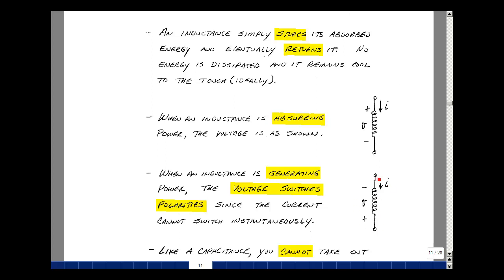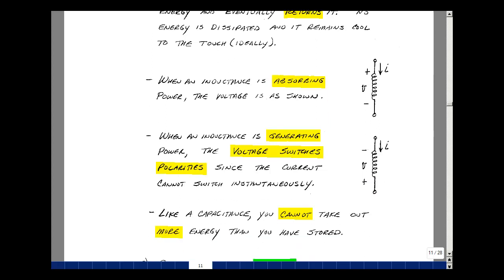For a capacitance, the current flips direction. For an inductance, the voltage flips direction. This can be very useful for building what are called switch mode power supplies. But like a capacitance, you can't take out more energy than you've stored. And this is inductance and some of its properties.